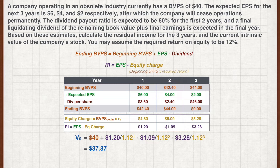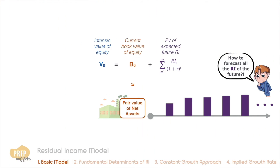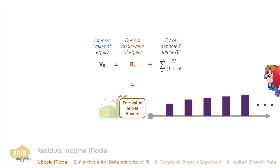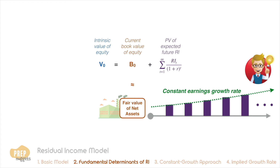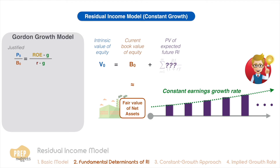This approach may be suitable for companies that will be discontinued soon, but it won't be suitable for most firms assumed to be operating long-term. Thankfully, like discounted cash flow models, we can make the simplifying assumption of a constant earnings growth rate. This allows us to develop a model to calculate the intrinsic value of a company's future residual income based on the Gordon Growth Model, which assumes a constant rate of earnings growth.